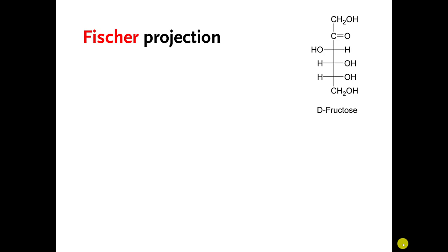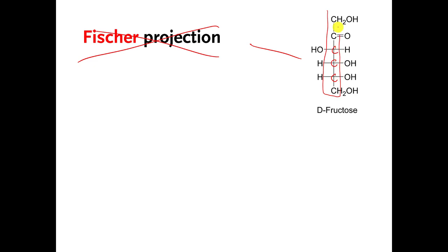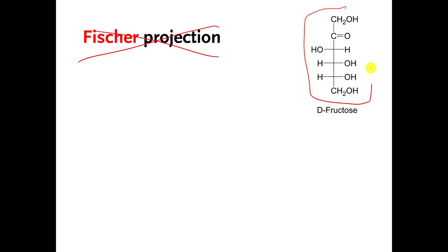There's a lot on this slide that I do not want you to know. I don't care about Fischer projections. This is a monosaccharide called D-fructose. The way that this molecule is drawn, the carbons are arranged in a straight line up and down — this is called a Fischer projection. But I don't really care that you know this. This is the way that I have been showing you monosaccharides in a previous video.